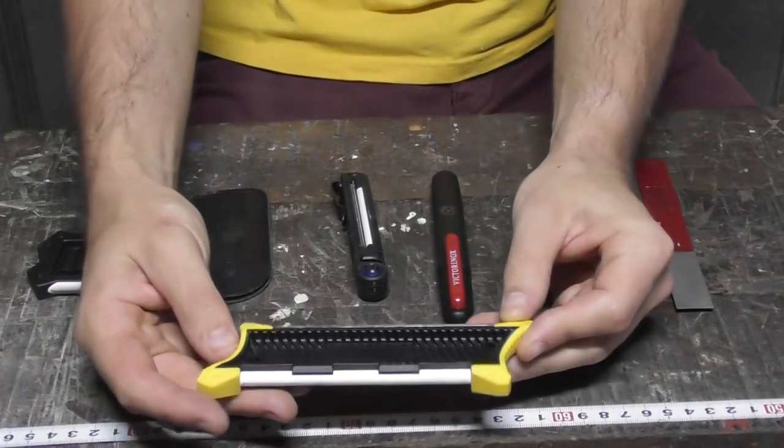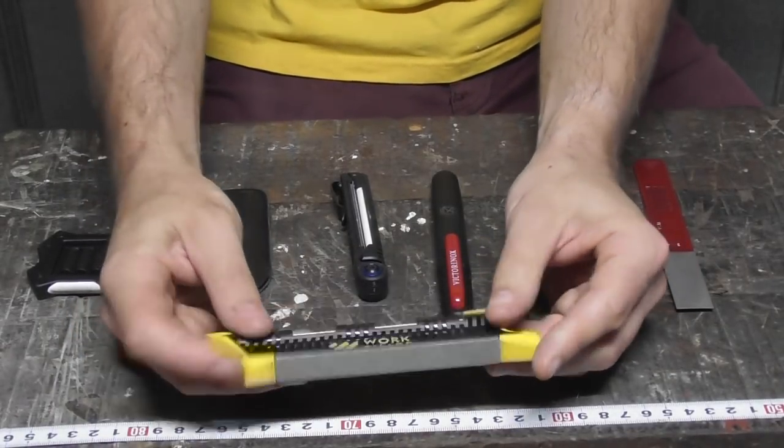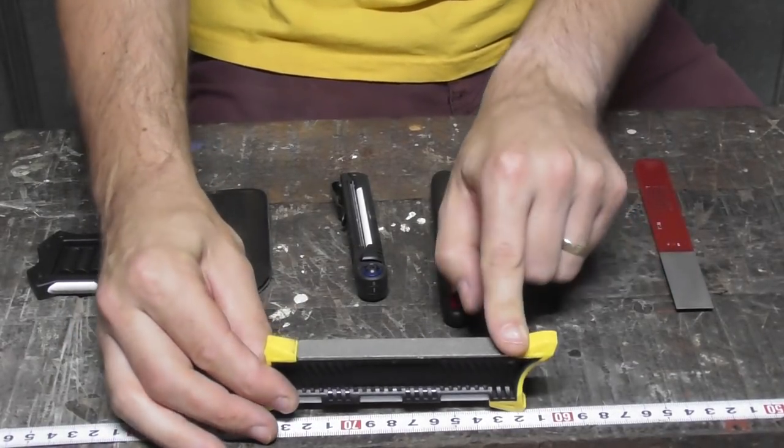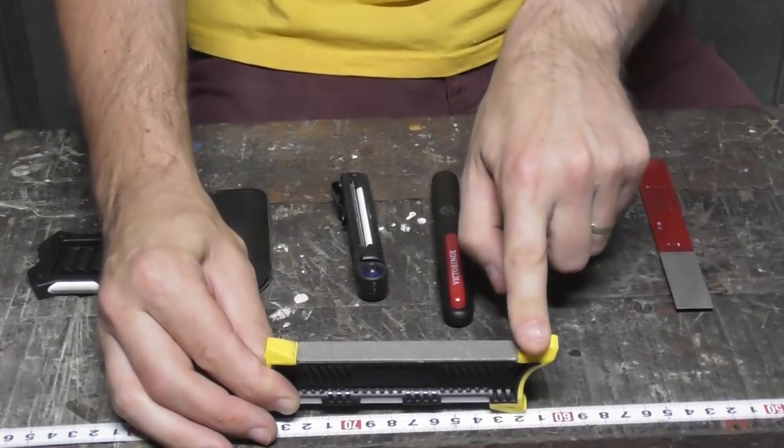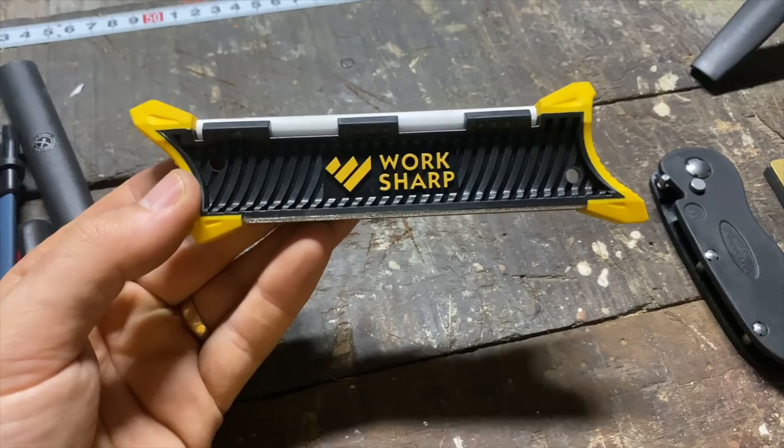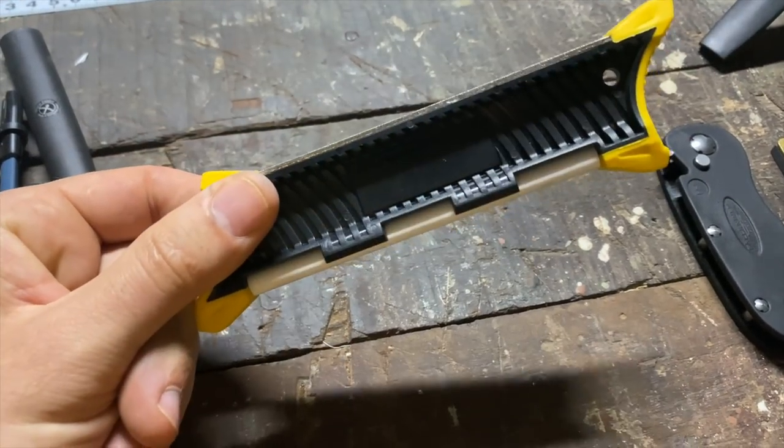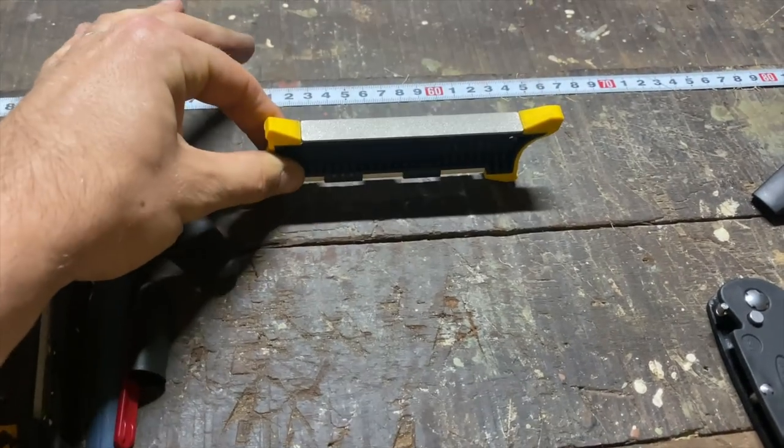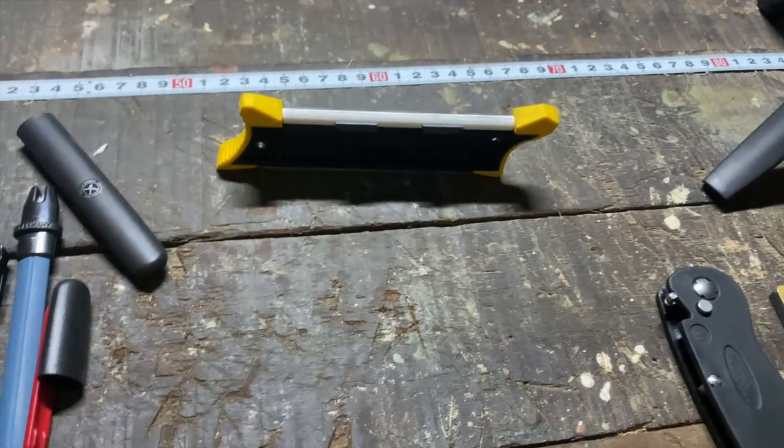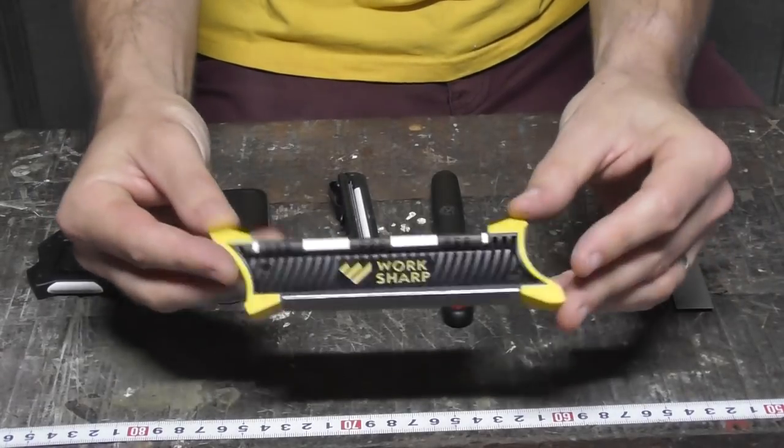Next one is the Worksharp Pocket Field Sharpener. So this one has two surfaces on it and guides. So you can rest your knife from here and then use that to steer your blade across. I'll demonstrate all these in use for restoring a dull knife to a sharp knife. And then you've got a ceramic rod for finishing off there. It's the largest of all of them and the boxiest of all of them.